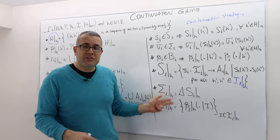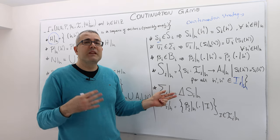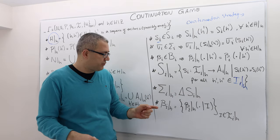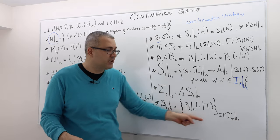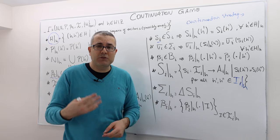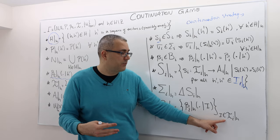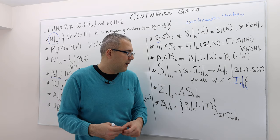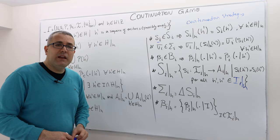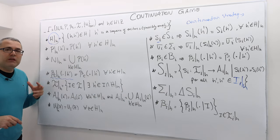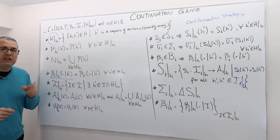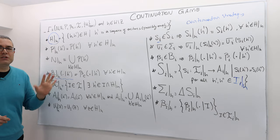What about constrained mixed strategies, or continuation mixed strategies? It's just a probability distribution over constrained pure strategies. Same for behavioral strategies — it's a collection of constrained behavioral strategies. This collection depends on how many information sets player i has in the constrained information partition. So this is how we somewhat formally define a continuation game. Let's talk about an example, and hopefully all those notions will become clearer.